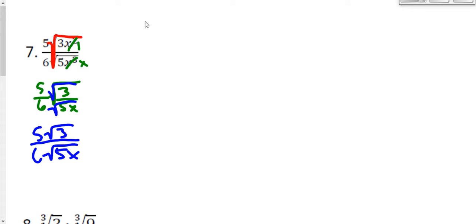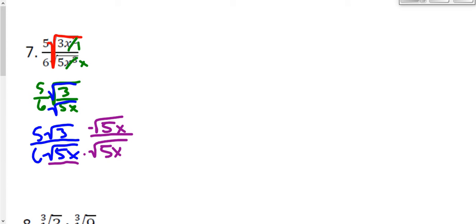I'm all done simplifying for right now, which means I would be finished if I didn't have this radical in my denominator. We are not allowed to have a square root in the bottom of a fraction — it's considered improper and we have to fix that. To remove a square root, we square it. So if I want to remove the square root of 5x, I multiply it by itself — the square root of 5x. And I have to multiply the numerator by the same thing so I don't change the proportion of the fraction. So we multiply the top by the square root of 5x as well.